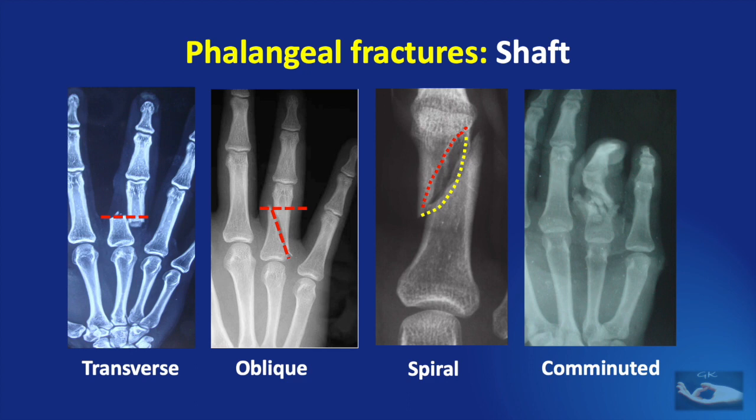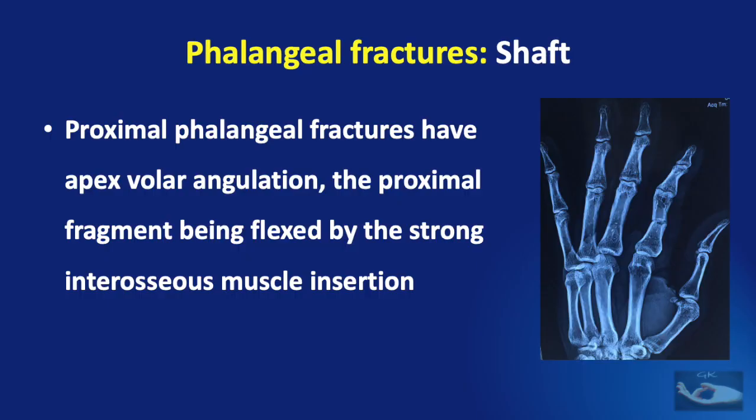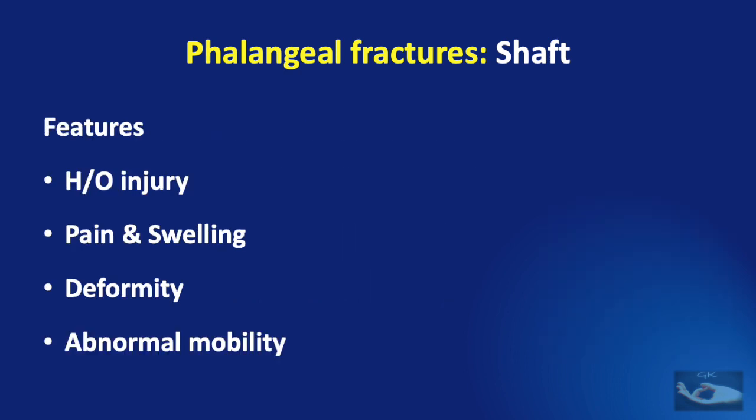In a comminuted fracture, there is a segmental crushing of the bone into multiple segments. In proximal phalangeal fractures, there is an apex volar angulation — the apex of the angulation points volarly because the proximal fragment is flexed by the strong interosseous muscle insertion. The patient with a fracture of the shaft of the phalanx presents with a history of injury, pain and swelling, a typical deformity, and sometimes abnormal mobility.